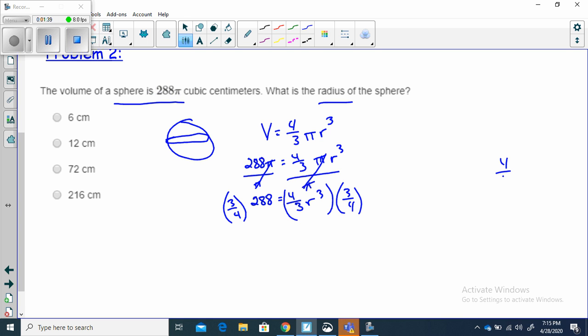Let me show you why this works. I am multiplying 4/3 by 3/4. If I do that, I get 4 times 3 is 12, 3 times 4 is 12, 12 divided by 12, which is 1. So if I multiply these by each other, I am going to have one r³. That gets me down to just r³. Now, let's multiply 3/4 times 288. In my calculator...